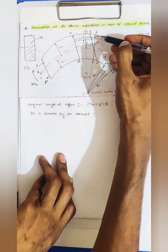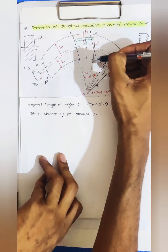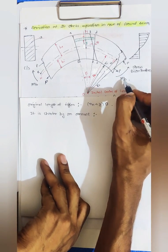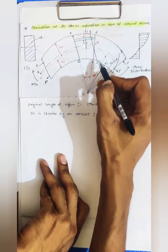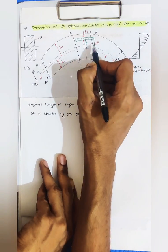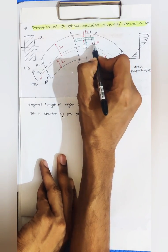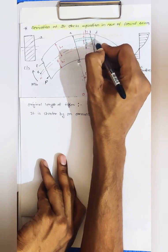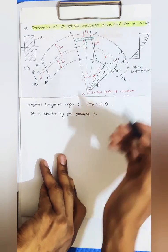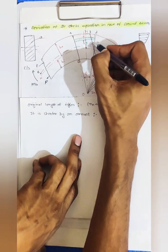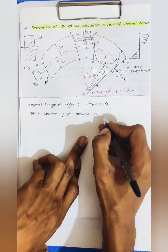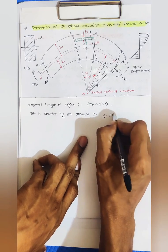I know this DC — the original DC. After applying the bending moment, DC changes to GF and it rotates by angle dθ. I know this angle and I know this length — it is y. So I can find the length of this layer, which will be y into dθ.